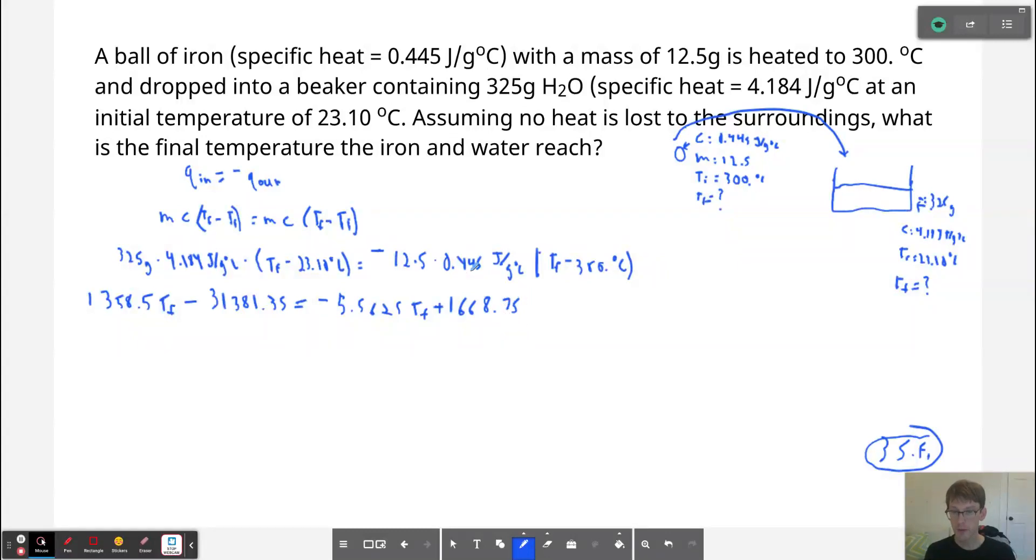And if you clean up the math from here, what we could do is add 5.5625 Tf to both sides. We could also add 31,381.35 to both sides. What we end up with, once we divide both sides by the coefficient of Tf, is 24.2 degrees Celsius equals our Tf. So there's our final temperature.